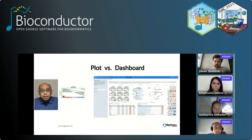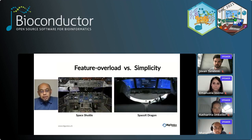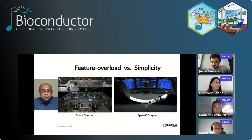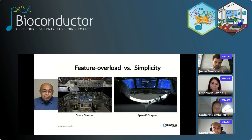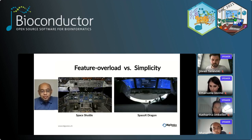Very important in our UX design: we want simplicity more than feature overload. The example is the space shuttle cockpit versus the SpaceX Dragon cockpit on the right, which is much cleaner and simpler. For the biologists, it's important not to be overloaded with features.